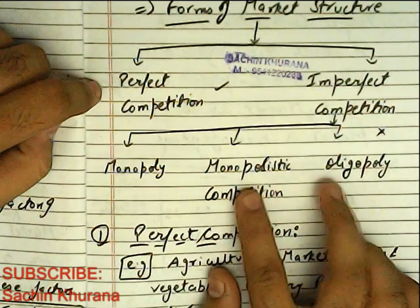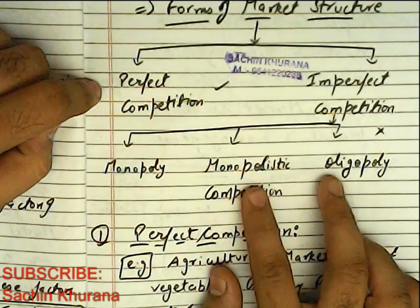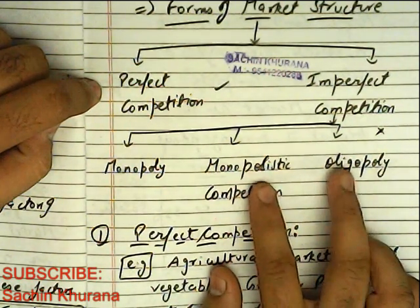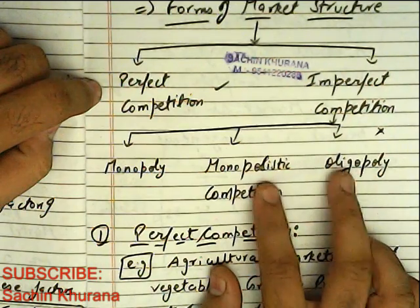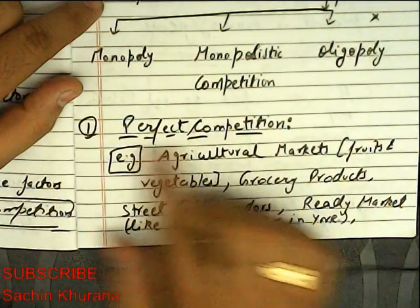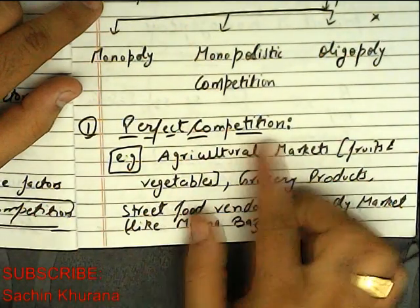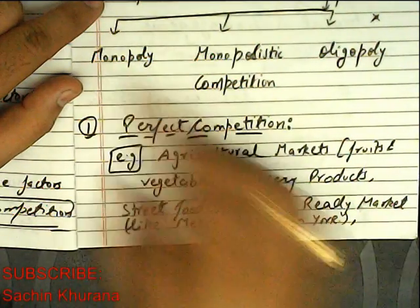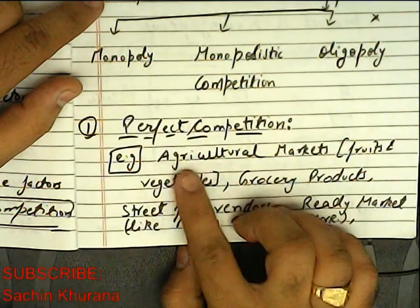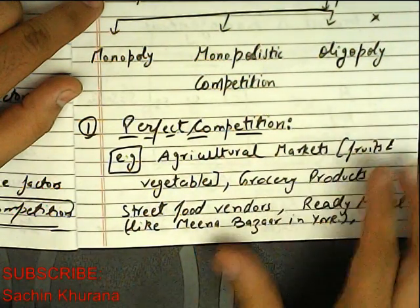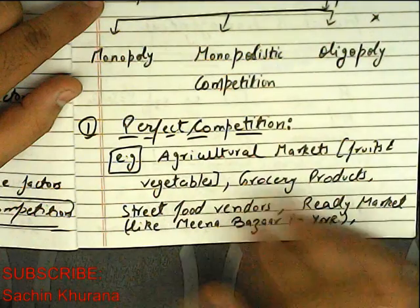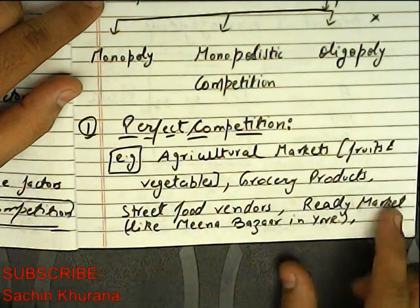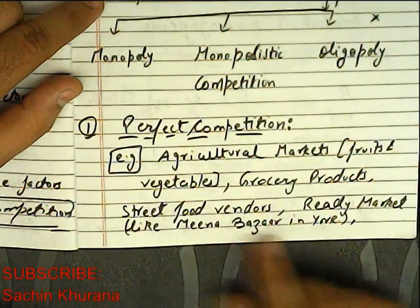These two forms — monopoly and monopolistic — have been removed from the syllabus for class plus one this year, so we will continue with perfect competition. Examples include agriculture markets, fruits and vegetables, grocery products, street food vendors, and ready markets like Meena Bazaar in Yamunanagar.